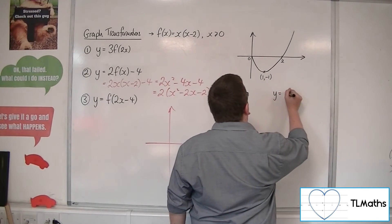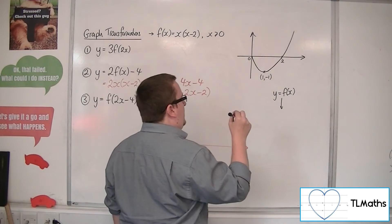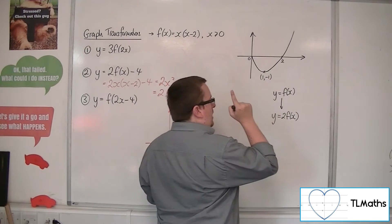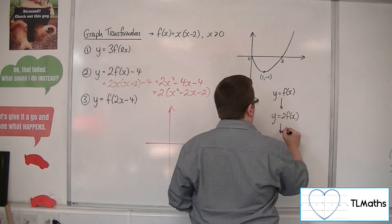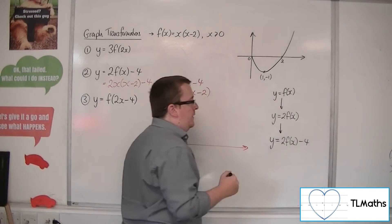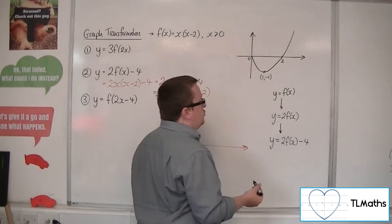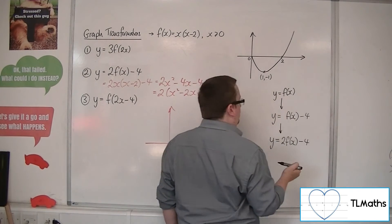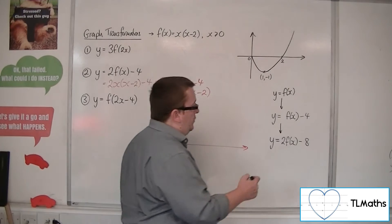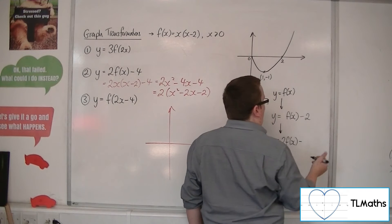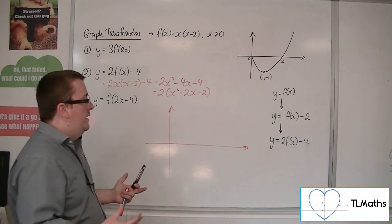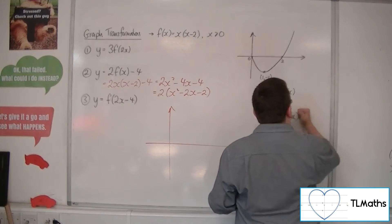If we start with y equals f of x and we perform the stretch first, that's your stretch in the y-axis parallel to the y-axis factor 2, and then we are going to subtract 4 from the y value, so that will be your translation. The translation comes second here. If you'd done the translation first and then you multiplied everything by 2, you would get 8 there. So you could do a translation by the vector 0 minus 2 and then multiply everything by 2. You could do it that way around, either or really. I'm going to stick with the way around I had it.